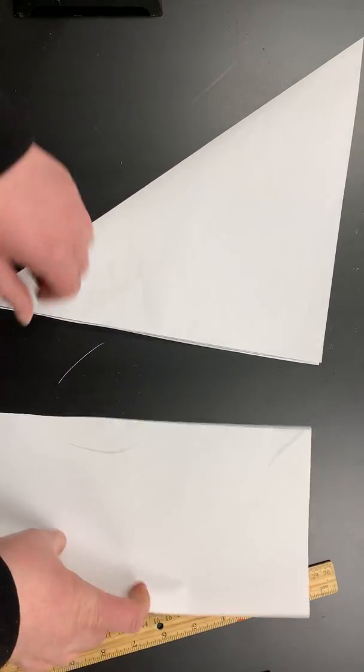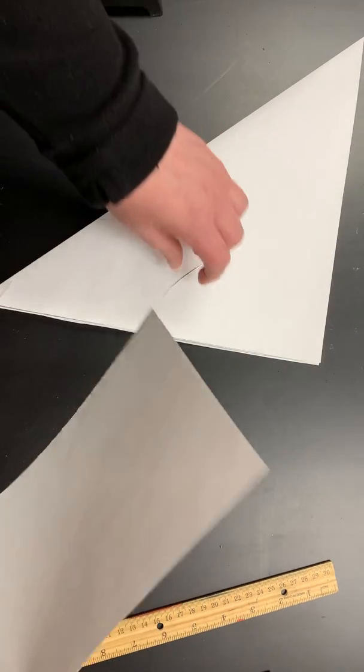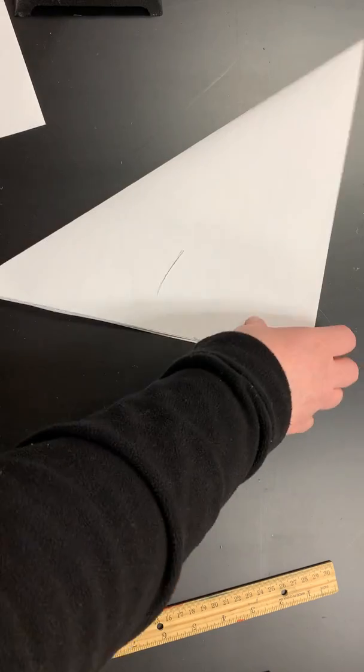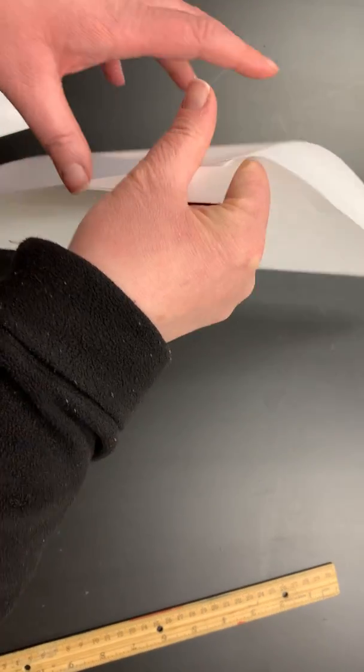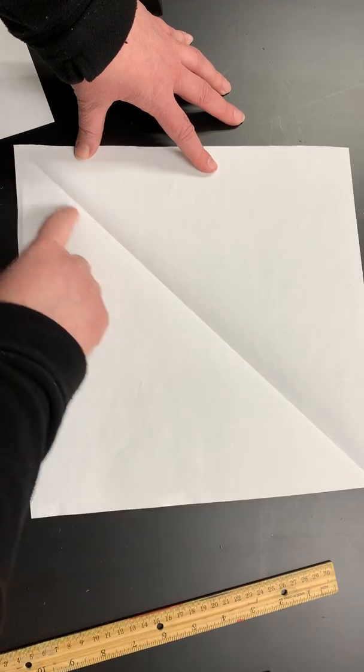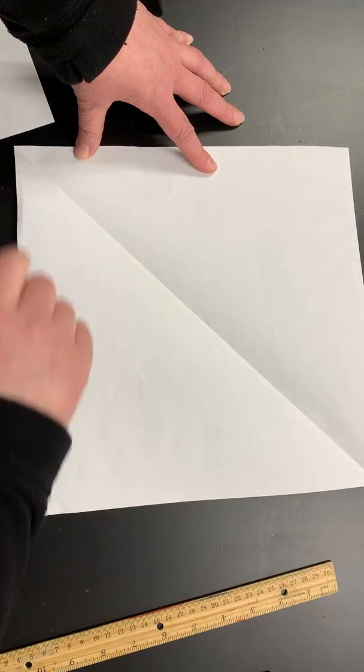Then you can hang on to this piece, or you can use it later, or you can recycle it. Of course, we want to recycle it if you can. So once we have that, we're going to open it up, and you should see that your paper is actually now a square, and you have a fold down the center, one diagonally.